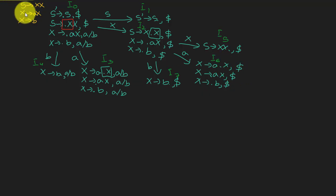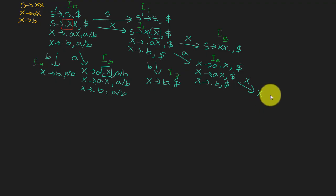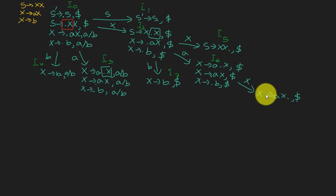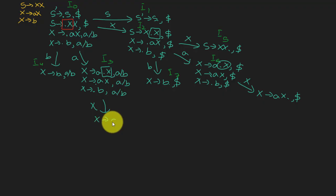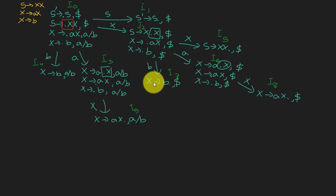Let's number the states: I0, I1, I2, I3, I4, and so on. We still haven't reached the accepting state for rule two, so on input X we get X goes to aX dot with dollar look-ahead during transition. From another state, X goes to aX dot with look-ahead a or b.